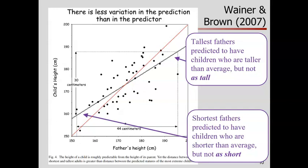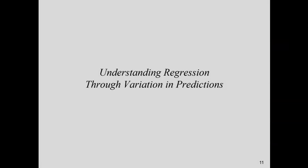So we see this phenomenon: tall parents are probably going to have tall children, but unlikely to be as tall. The same thing for shorter parents — they're more likely to have shorter children on average, but not as short as they are. Our prediction would be that they would regress to the mean — get a little bit closer to the average from both extremes.